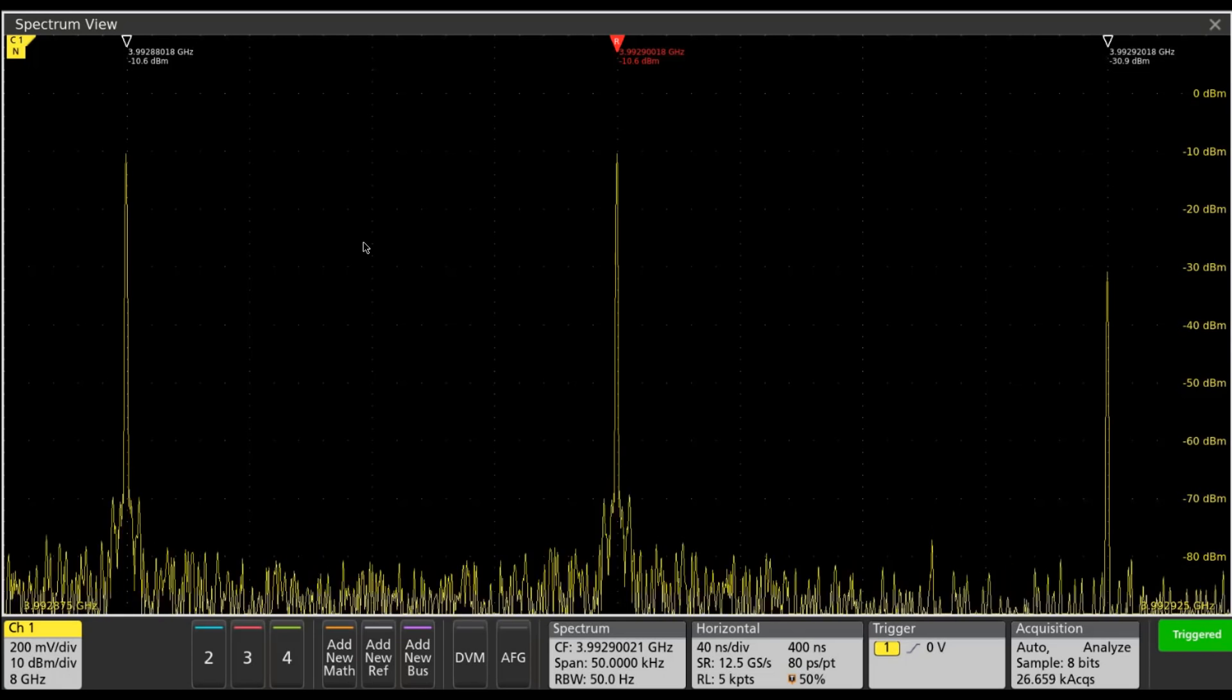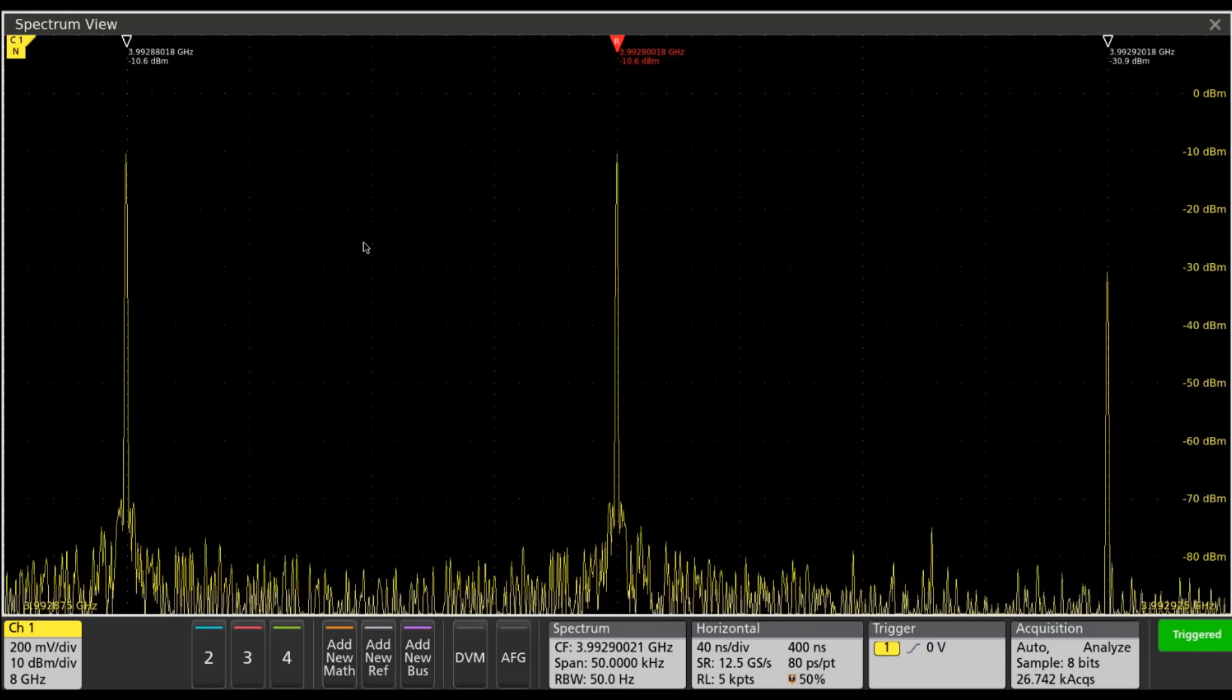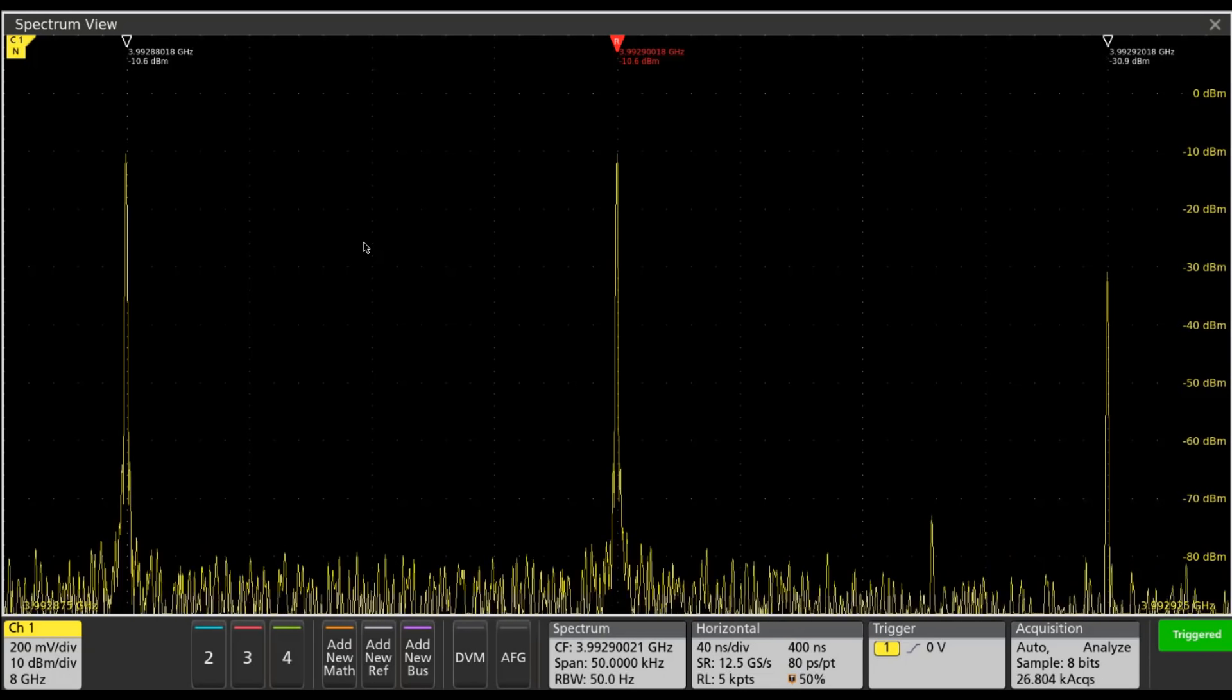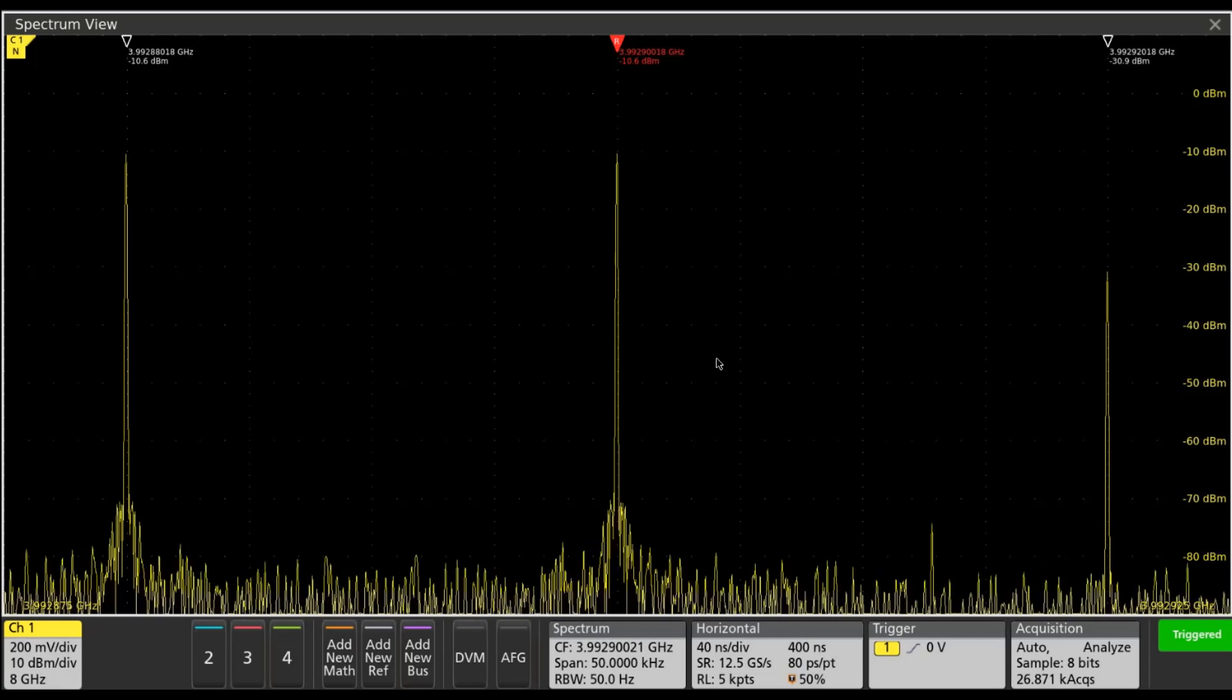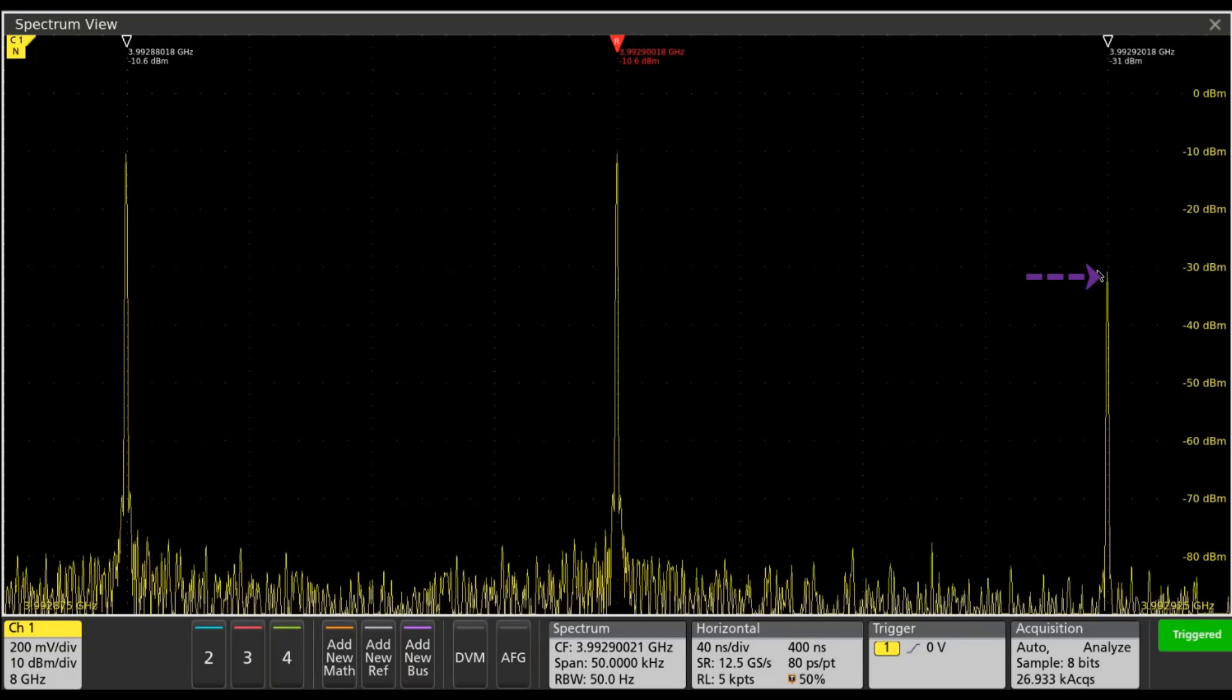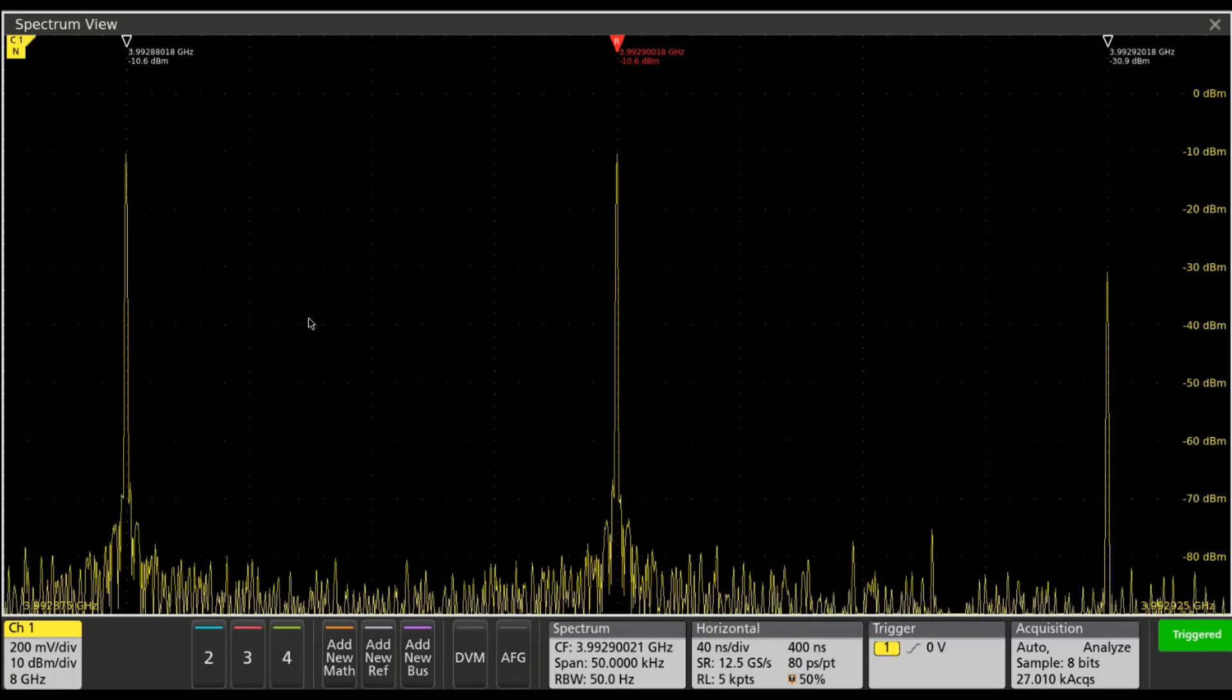I'm using a mixer here because the intermod products are going to arise due to non-linearities, and this simple mixer I have is not a perfectly linear device. So in addition to the two up-converted tones, I see one of the third-order intermod products over here, just 20 kHz away because my original tones are 20 kHz apart.